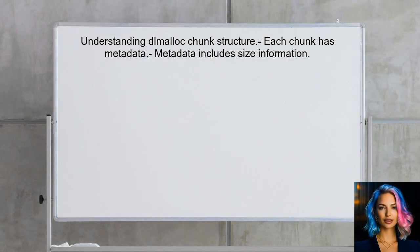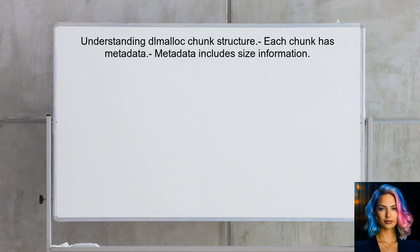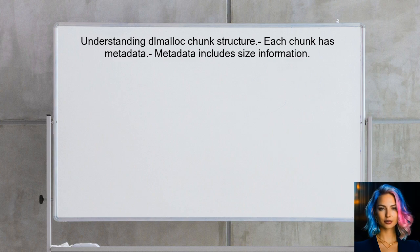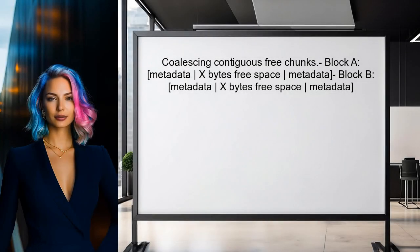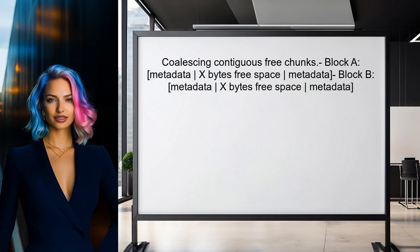To understand how DLMALOC coalesces chunks, the user should first recognize the structure of the chunks. Each chunk is surrounded by metadata that contains information about its size. When two contiguous free chunks are present, like block A and block B, the user needs to determine how to combine them. The first step is to identify the total size of the coalesced block.